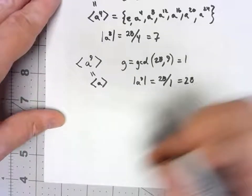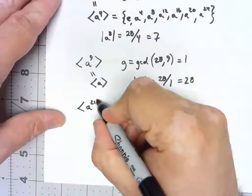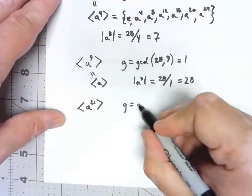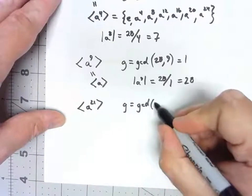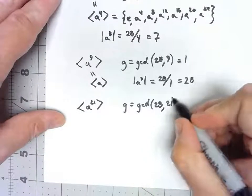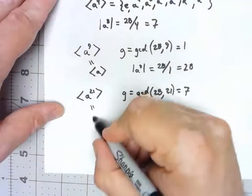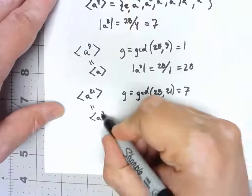One more. If I were to look at the subgroup generated by a^21, in this case, my GCD of 28 and 21 is 7. So this is the same as the subgroup generated by a^7.